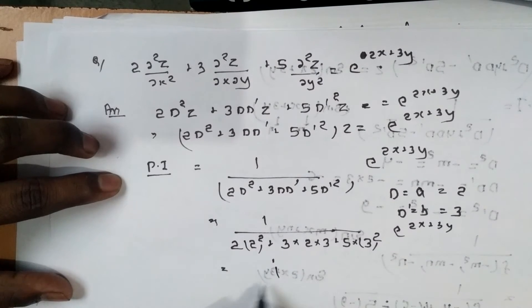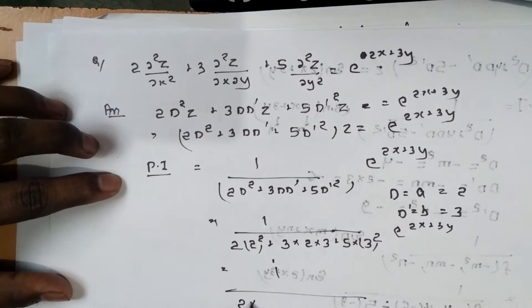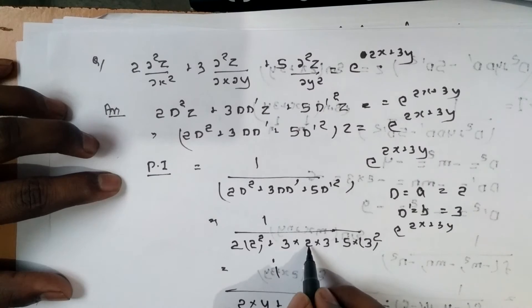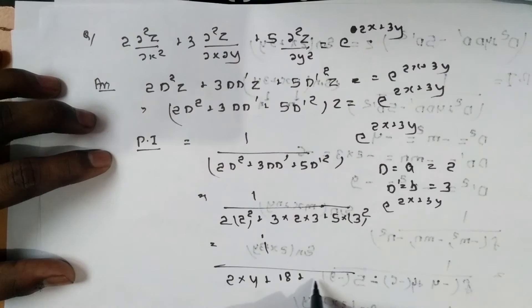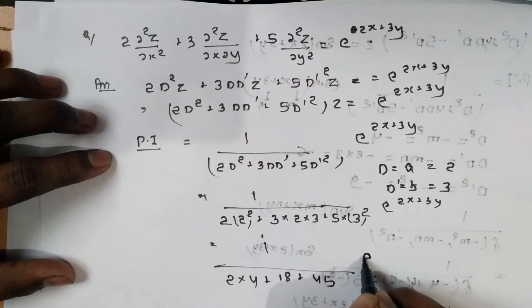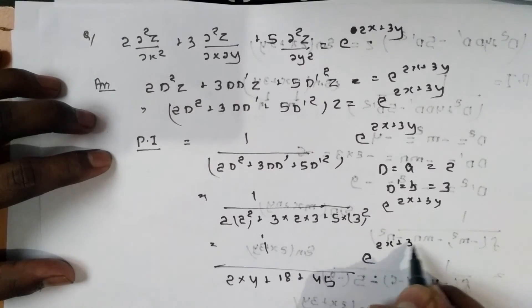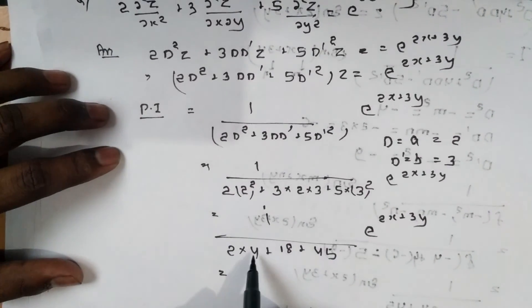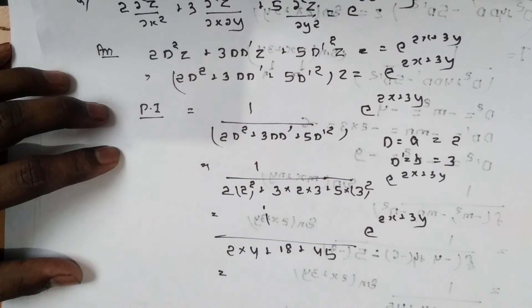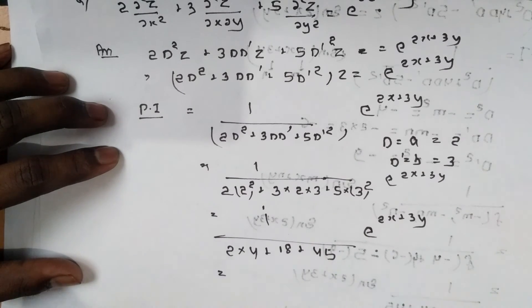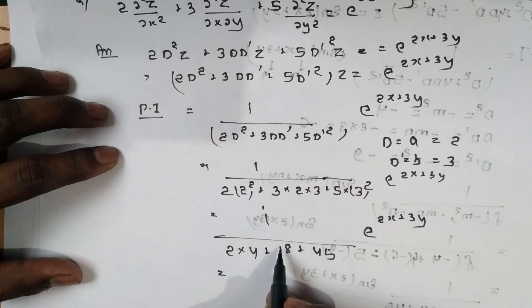Computing the result: 2(4) = 8, 3(2)(3) = 18, and 5(9) = 45. Now add all these: 45 + 18 + 8 equals 71.